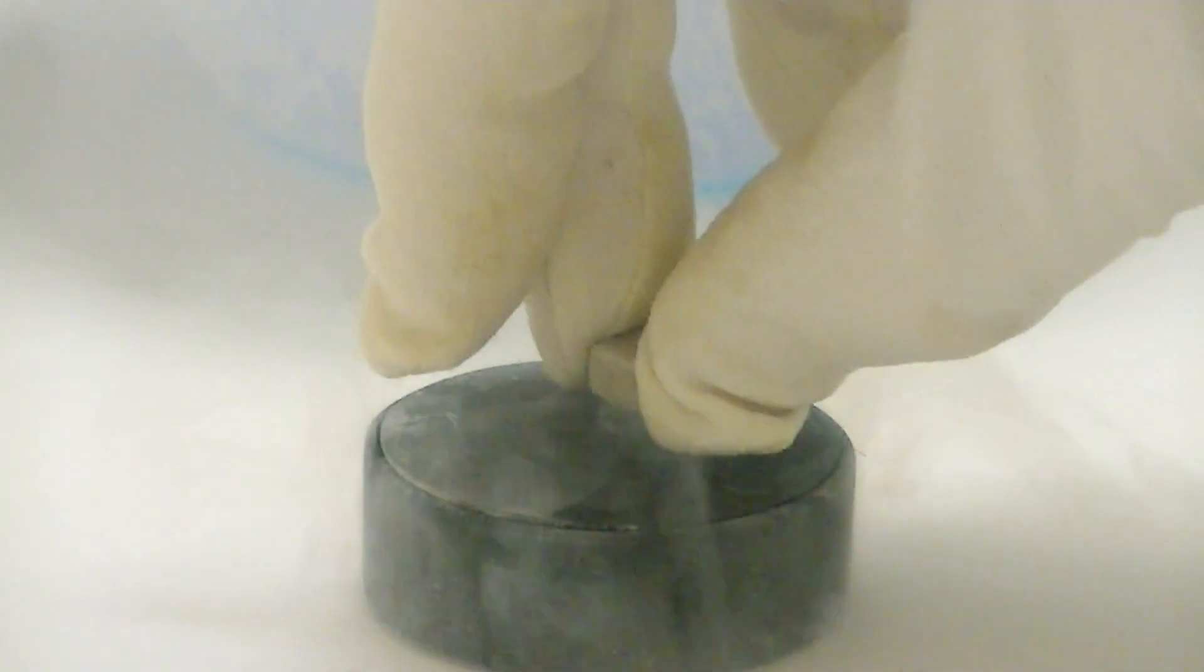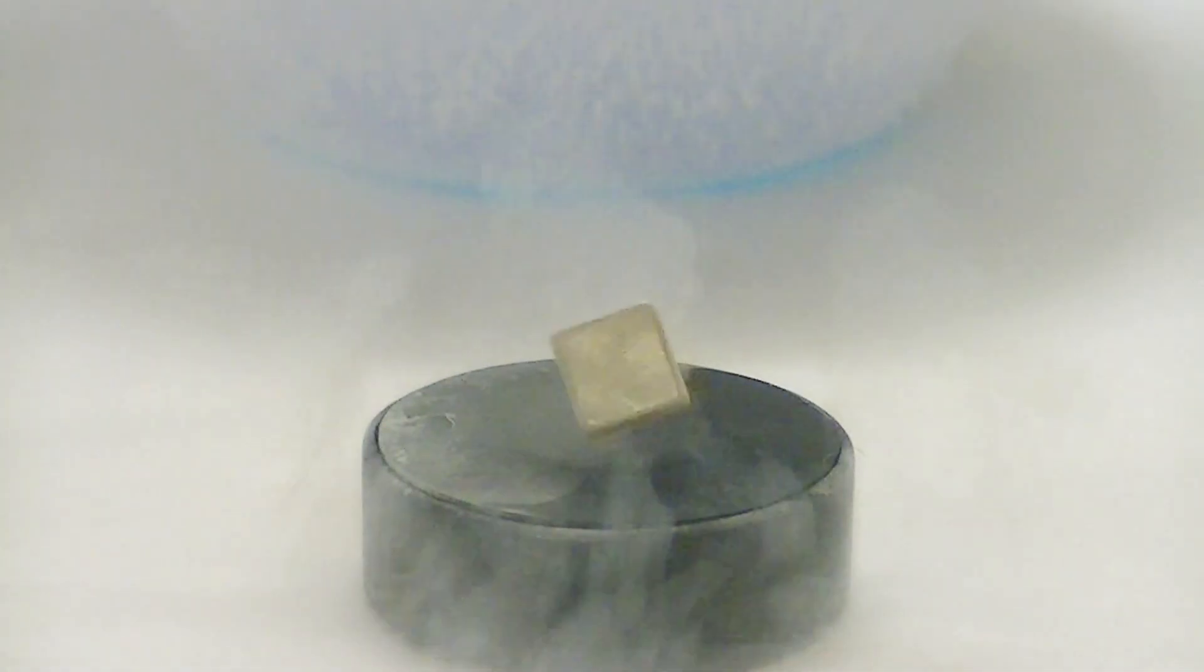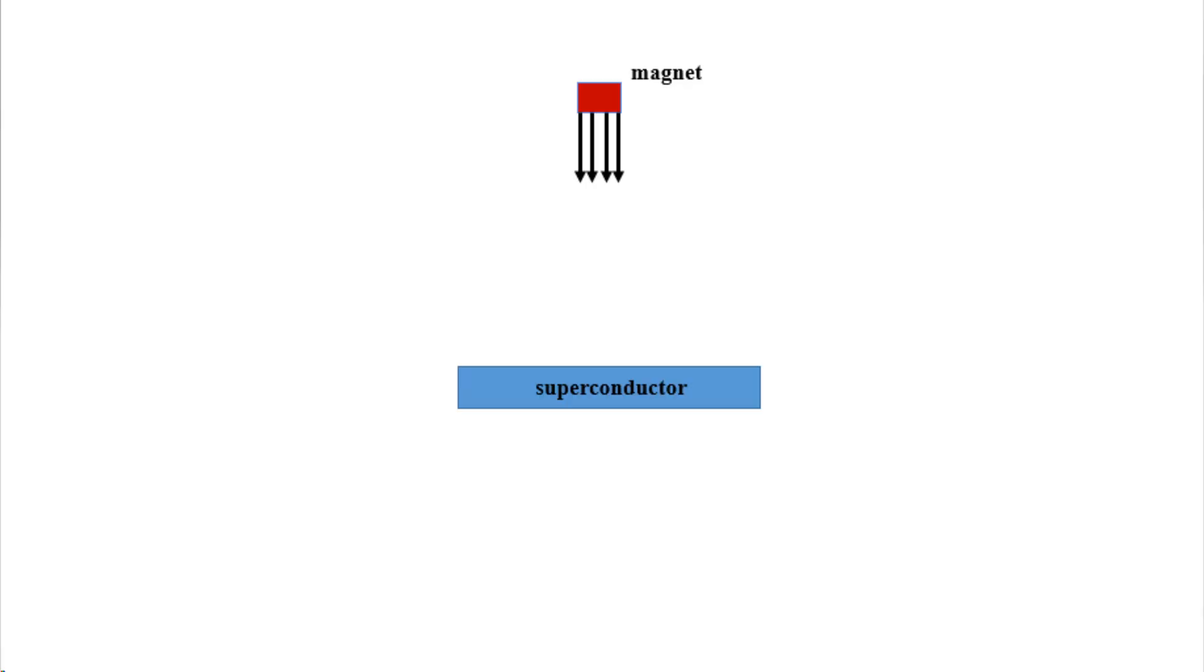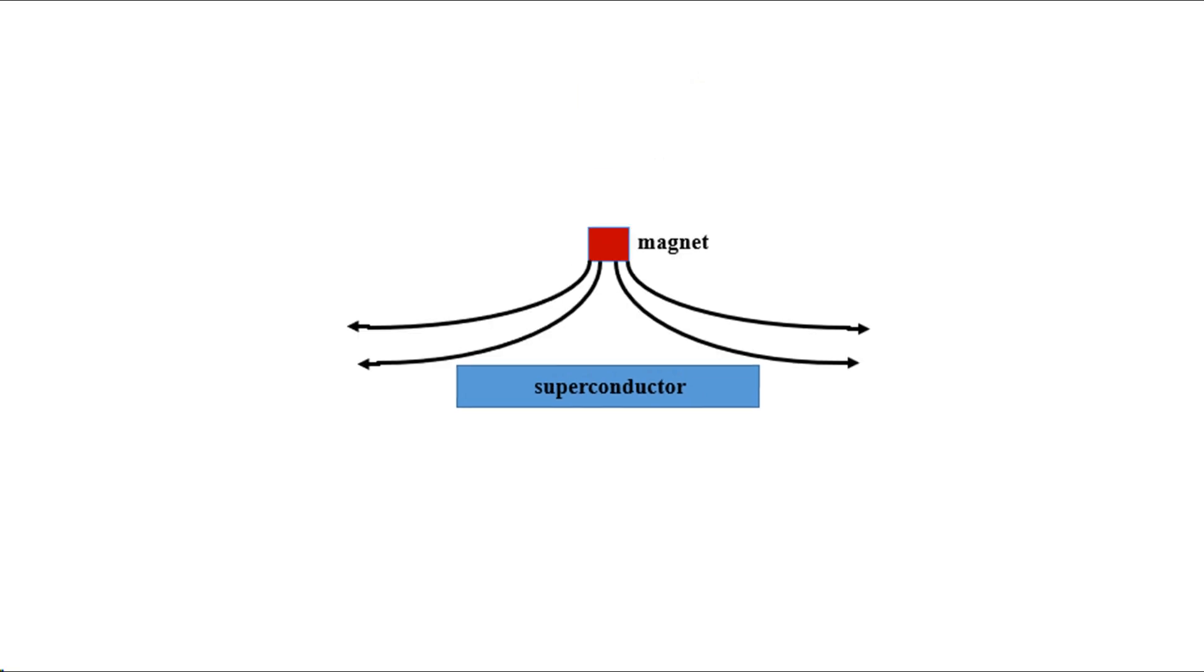The weird interactions between superconductors and magnets happen because superconductors expel magnetic fields. This is known as the Meissner effect. A magnet placed above a superconductor will of course fall due to gravity. As the magnet falls, its magnetic field approaches the superconductor.